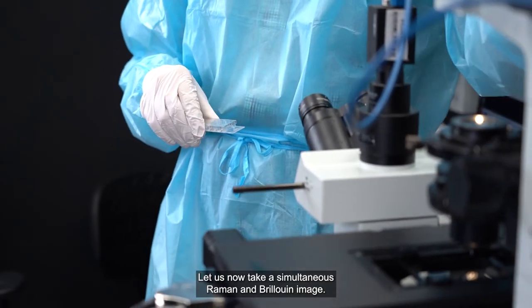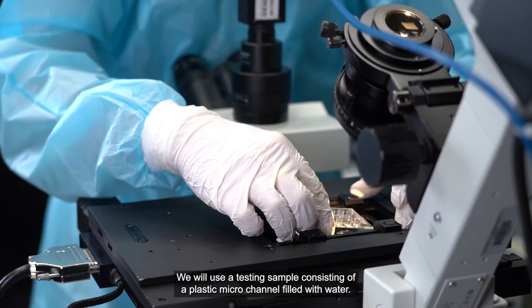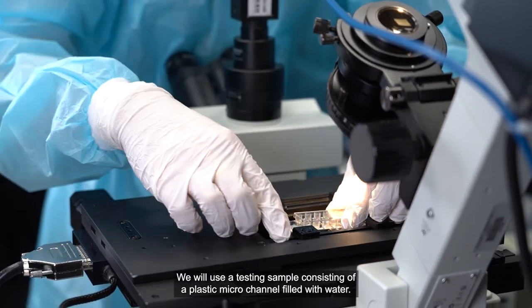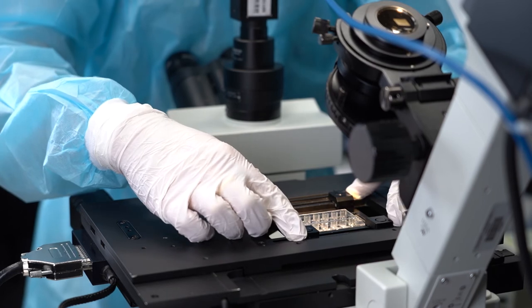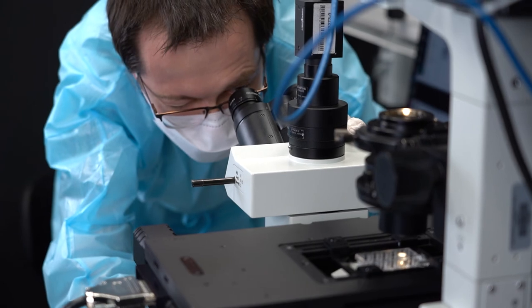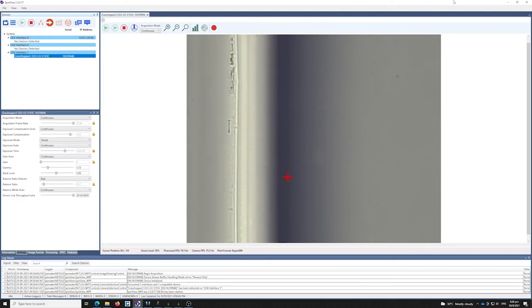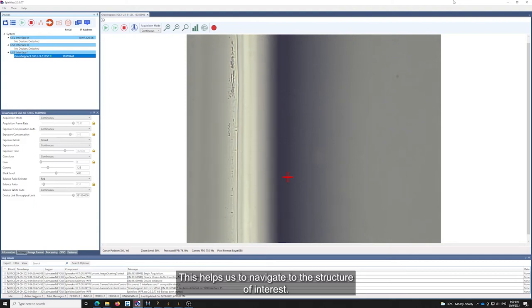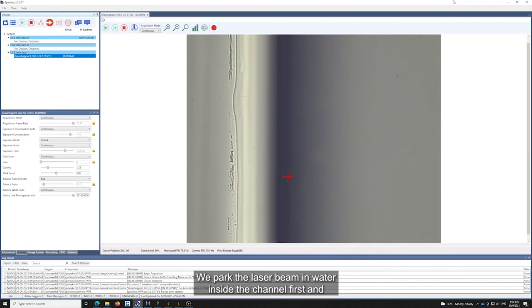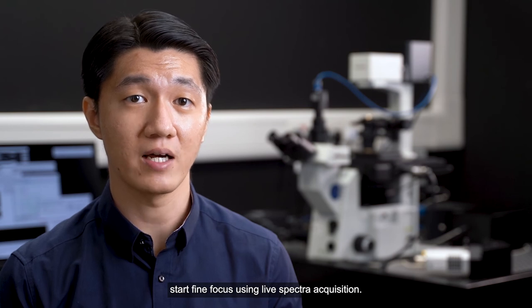Let us now take a simultaneous Raman and Brillouin image. We will use a testing sample consisting of a plastic microchannel filled with water. We place the sample on the stage and use brightfield image to focus. The laser beam position is marked by this crosshair in the brightfield image. This helps us navigate to the structure of interest. We pump the laser beam in the water inside the channel first, and start fine focusing using live spectral acquisition.